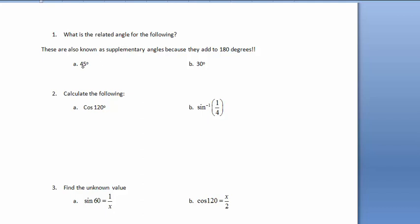Related angles are the same as supplementary angles. They add to 180 degrees, so what adds to 180? 45 plus what makes 180 is 135. 30 plus 150 degrees makes 180 degrees. That's all we're looking for.